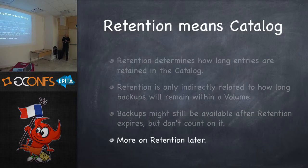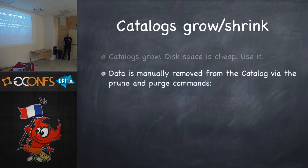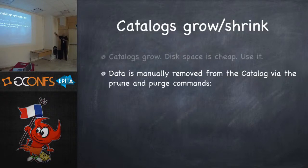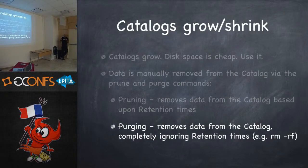A little more on retention: catalogs shrink and grow. If you're always backing up, the catalog keeps getting bigger, but you can prune older jobs through a pruning process — manually or automatically. I do it automatically: it checks if anything in the catalog is past its retention date and removes it. But pruning only removes stuff from the catalog, not from disk or tape. You can also purge manually, which removes stuff from the catalog irrespective of retention — you're just saying delete it regardless.